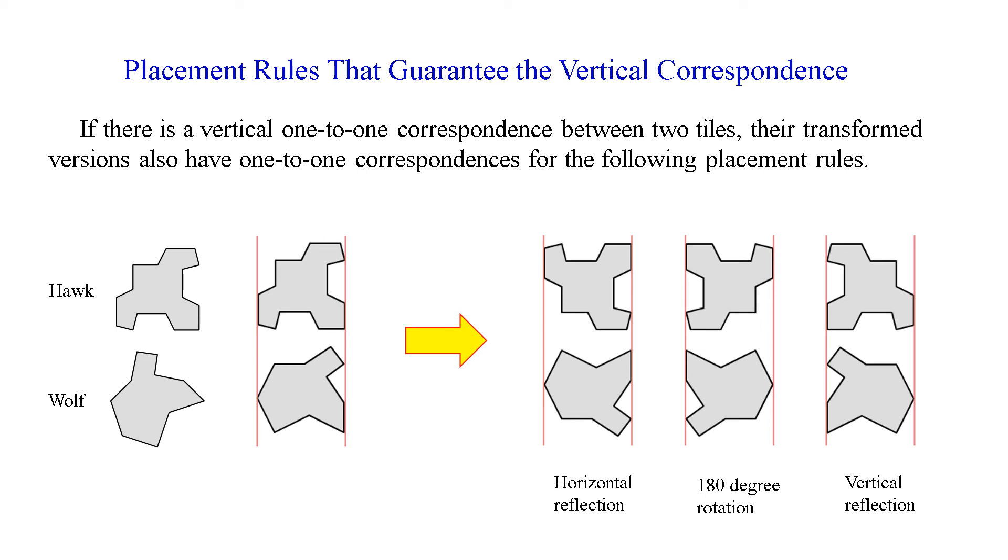The correspondence is kept if we place the tiles by horizontal reflection, 180 degree rotation, or vertical reflection. Making use of these properties, we can construct the ambiguous tiling relatively easily.